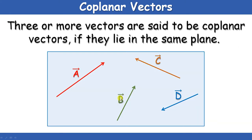Now, co-planar vectors — as the name itself indicates, two, three, or more vectors are said to be co-planar if they lie in the same plane. For example, if you draw different arrow marks on a sheet of paper, they will be in the same plane. Similarly, different arrow marks on the plane of the blackboard are also in the same plane. So these vectors are known as co-planar if they are confined to the same plane.